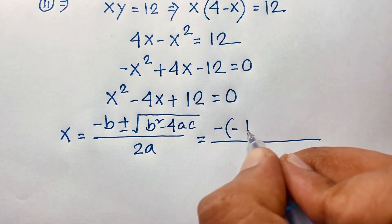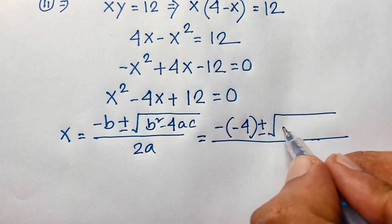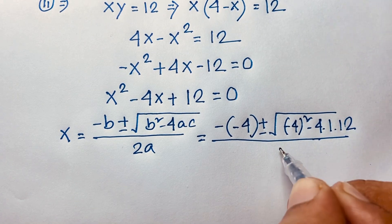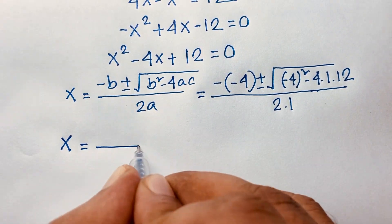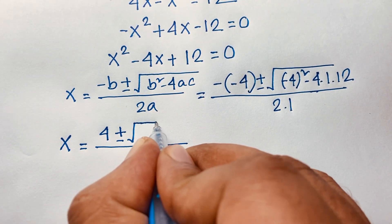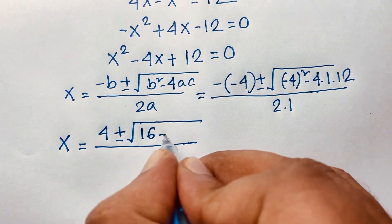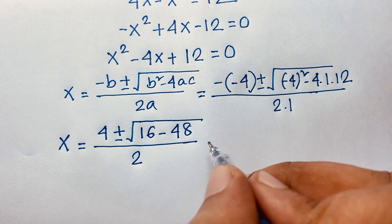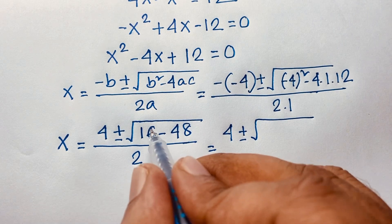Substituting: x equals negative (negative 4) plus or minus square root of (negative 4) squared minus 4 times 1 times 12, all over 2 times 1. This simplifies to 4 plus or minus square root of 16 minus 48, over 2. That gives 4 plus or minus square root of negative 32, over 2.